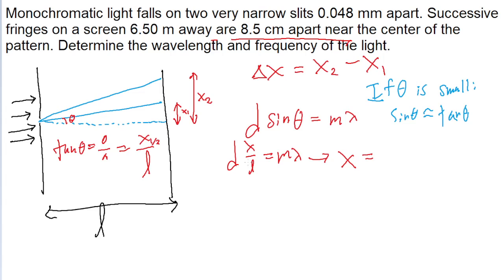So let's rewrite this equation to solve it for x. So x is going to be, and then I'll multiply both sides of this equation by L and divide both sides of the equation by d, so that becomes m lambda l all divided by d.